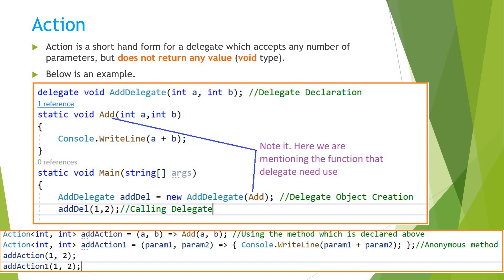So in later versions of .NET, Microsoft came up with solutions like Action, Func, and Predicate. Here we have an example for Action. This statement and this statement work similarly but the syntax is different. Here we have declared an Action which accepts two integer values — as we discussed, this will not return any value.